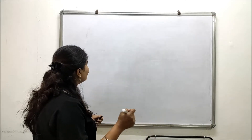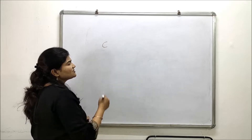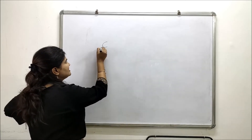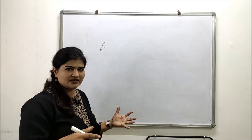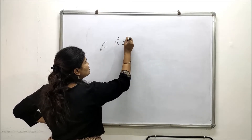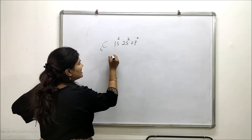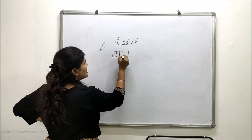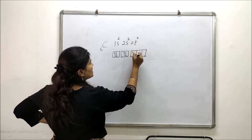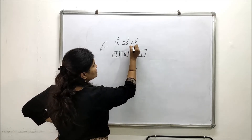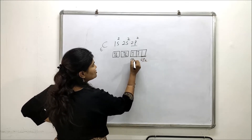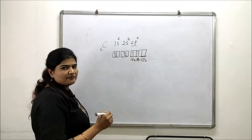Let's start discussing why hybridization happens, beginning with carbon. The electronic configuration of carbon — which has six electrons — is 1s2, 2s2, and 2p2. In the p shell: 2px and 2py are half-filled, and 2pz is an empty vacant orbital.